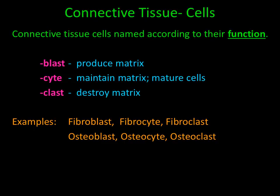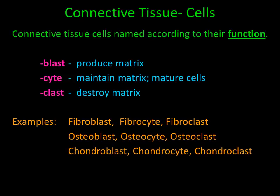An osteoblast produces bone, an osteocyte maintains bone, and an osteoclast destroys or breaks down bone. The last example of connective tissue cells would be a chondroblast, a chondrocyte, and a chondroclast. A chondroblast produces cartilage, a chondrocyte maintains cartilage, and a chondroclast destroys or breaks down cartilage.